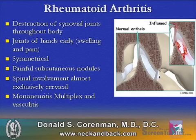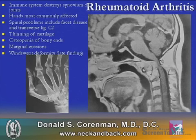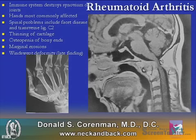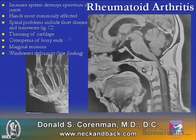Patients with rheumatoid arthritis can develop mononeuritis multiplex and even vasculitis. Rheumatoid arthritis is an immune system which destroys the synovium of the joints. The hands are the most commonly affected, and the picture here shows the typical periarticular absorption and the windswept deformity of the fingers. Spinal involvement is also noted, and there can be a dislocation or translocation of C1-on-2, causing significant spinal cord compression.